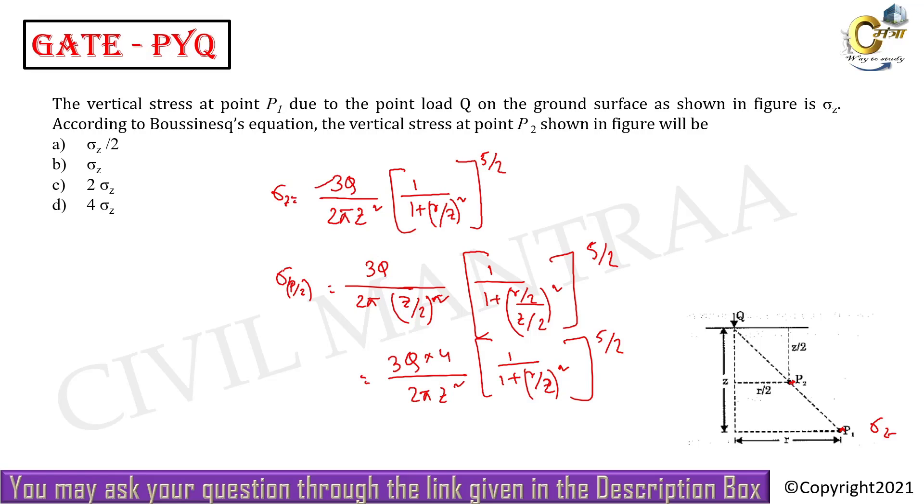So the difference between these two is 4 times. So at this point, sigma P2 will be 4 sigma z. So D is the right answer. This is a formula-based question. If you know the formula, you can easily solve this problem. Thank you for watching.